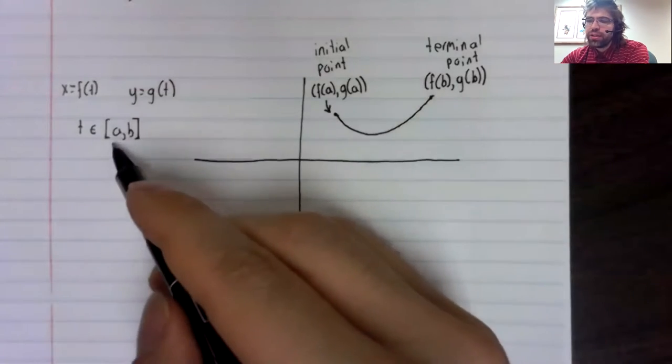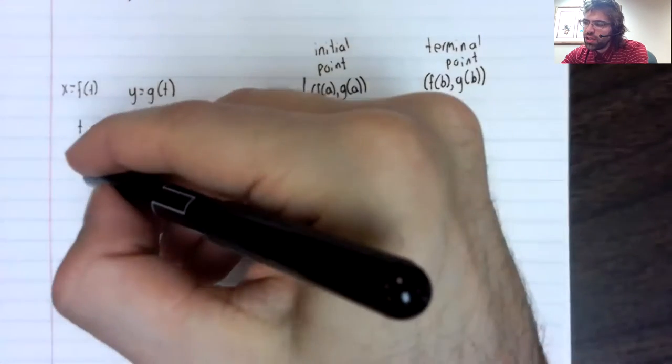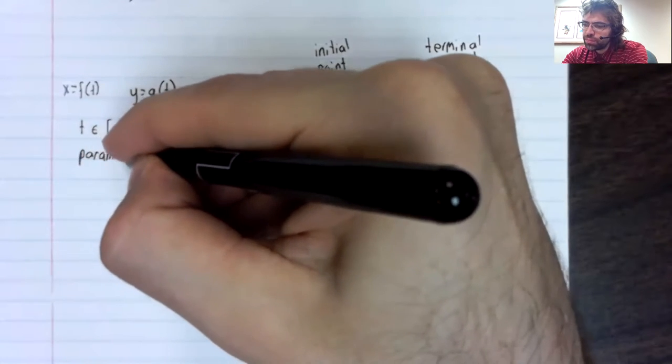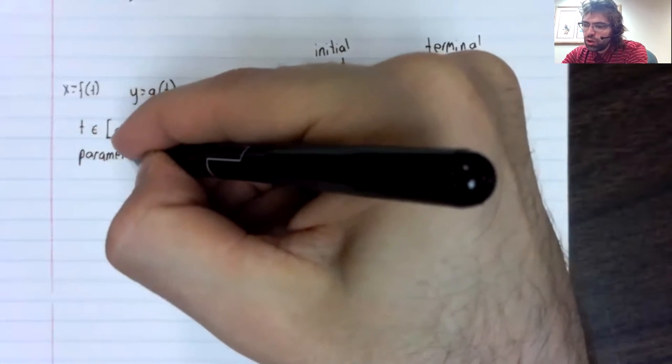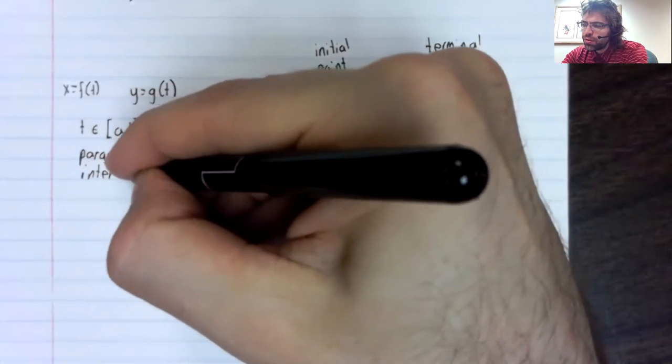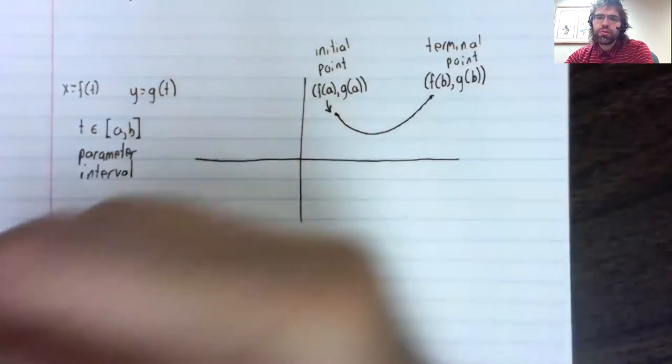And this interval here, the interval from a to b is called the parameter interval.